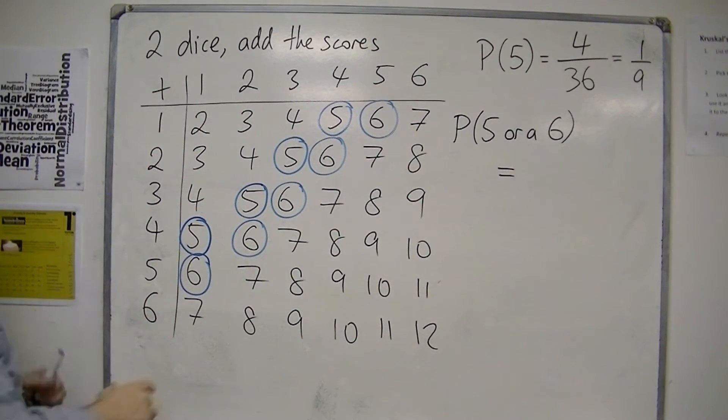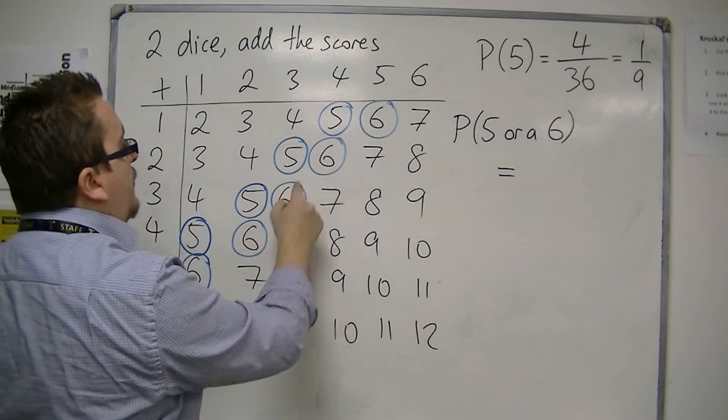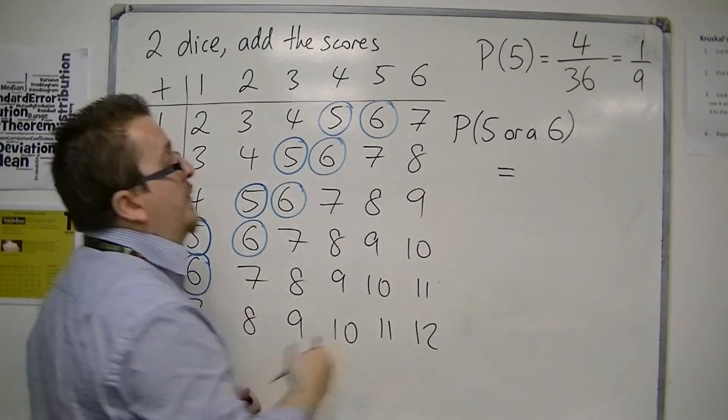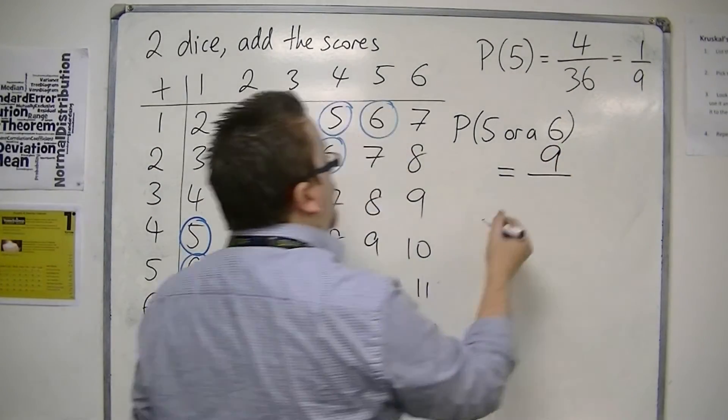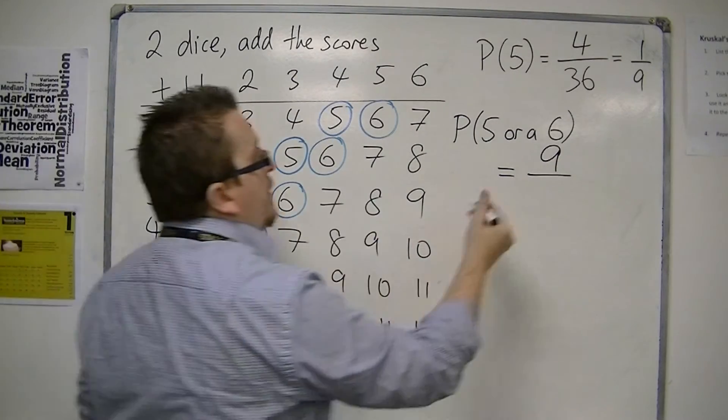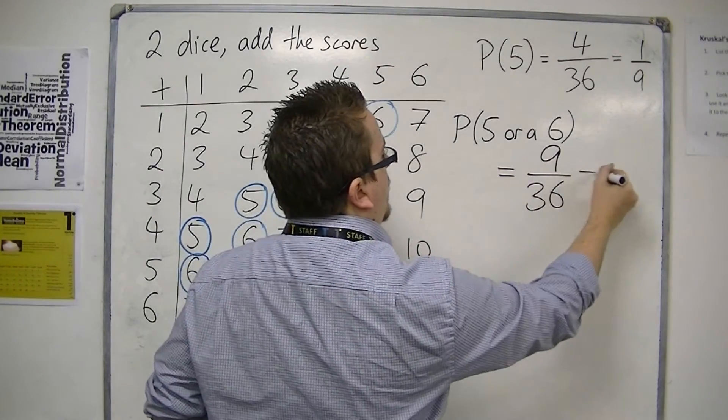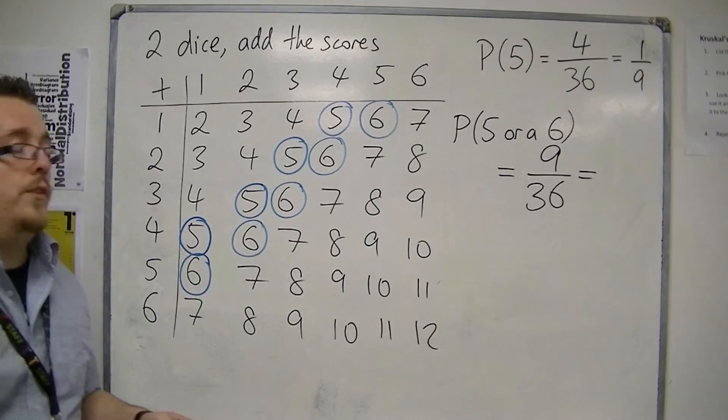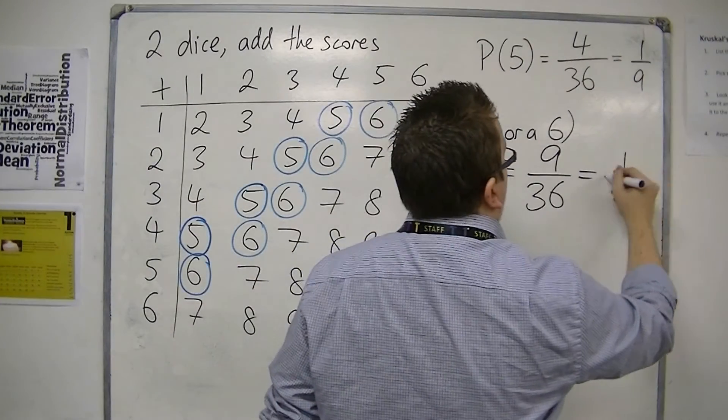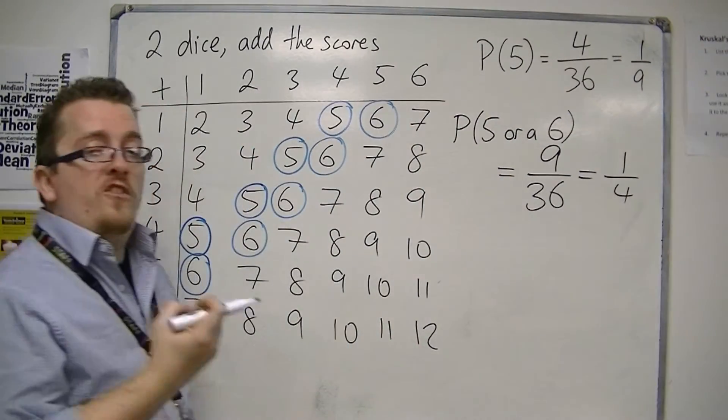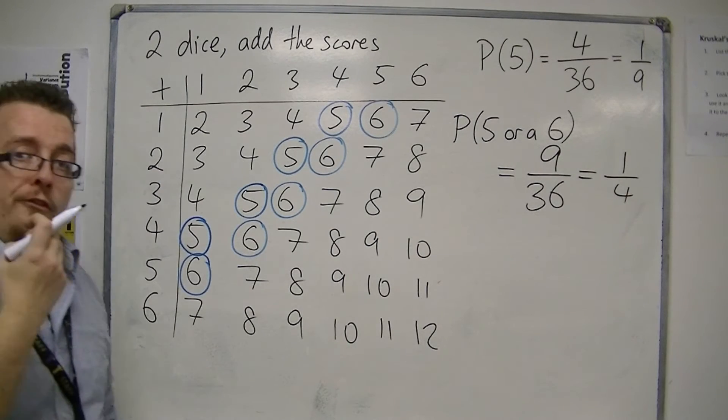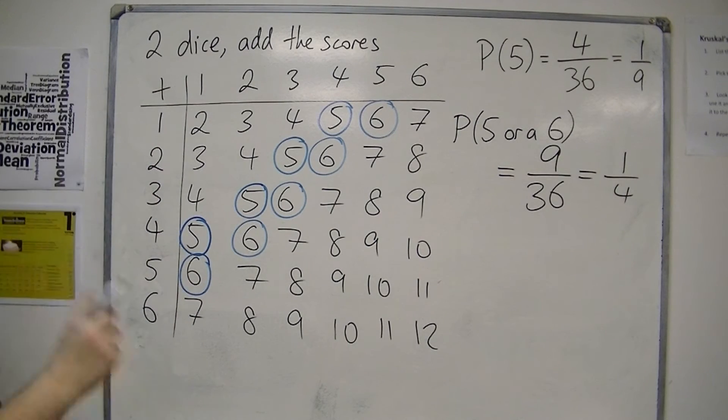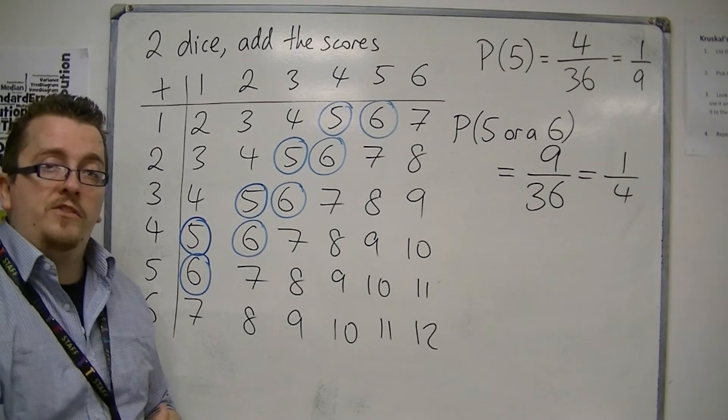They can either get a five or a six. And so now we have one, two, three, four, five, six, seven, eight, nine possibilities out of still thirty-six. So nine out of thirty-six is one-quarter. So they have a twenty-five percent chance of rolling a score that will land them on my hotels, for example.